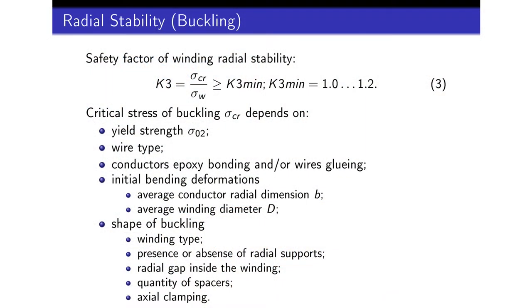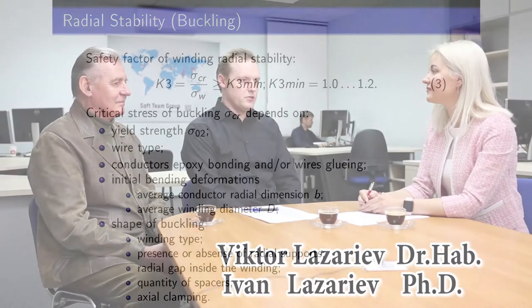The criterion of buckling withstand capability is similar to that in the informative Annex A, the difference being that the informative Annex A suggests using a set of empirical coefficients to take into account the wire type and the conductor's epoxy bonding, whereas Welding's theory and calculation methods are based on rigorous application of laws and relations of mechanics of deformable systems, and thus they take into account all the listed parameters in this slide to calculate the critical stresses of buckling.